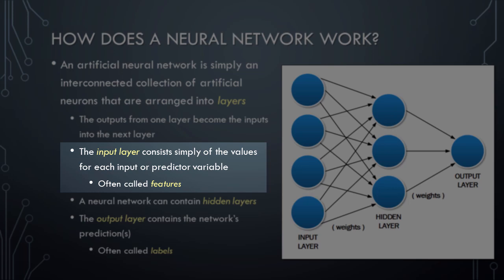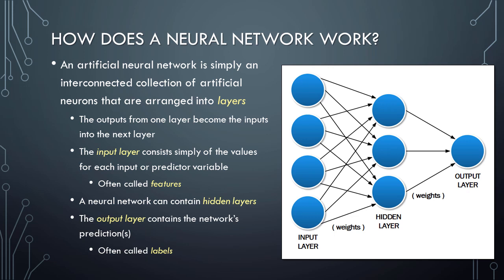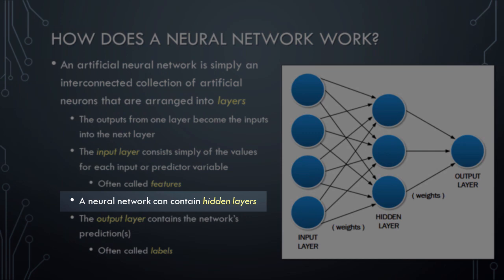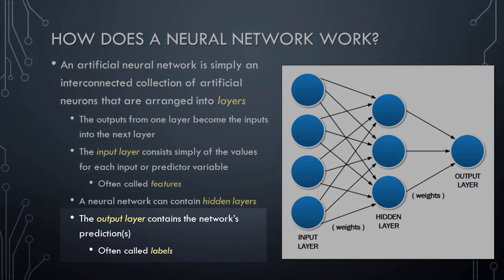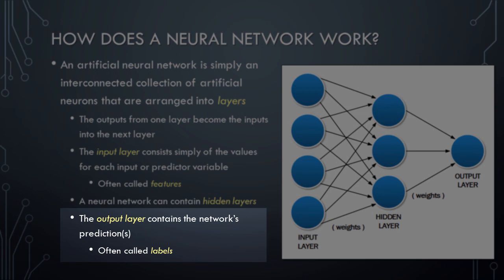The input layer consists simply of the values for each input, or predictor, variable — these are often called features. The artificial neurons in the input layer typically do not have an activation function, meaning the input values are passed directly to the next layer without transformation. An artificial neural network can also contain hidden layers, which are called hidden because they are not visible outside of the model — we know the inputs and outputs but have no knowledge of how inputs are converted into outputs inside. Finally, the output layer contains the neural network's predictions, often referred to as labels.